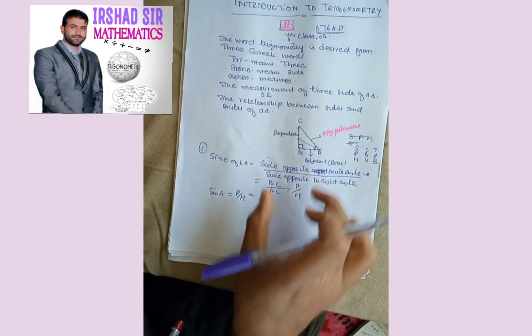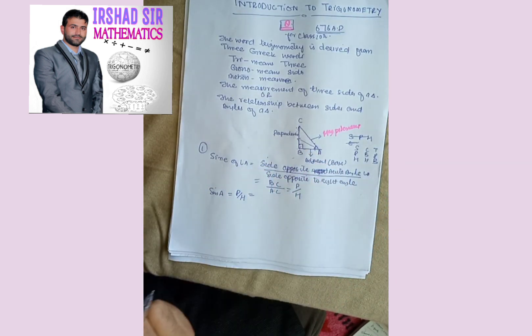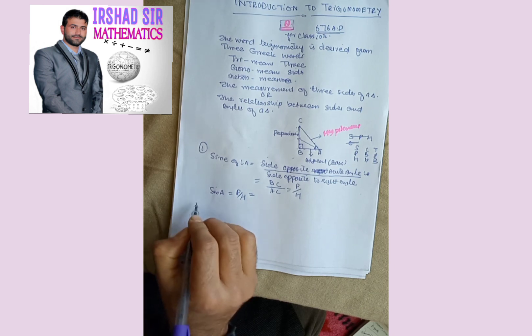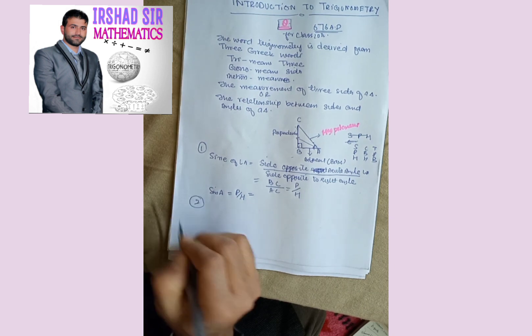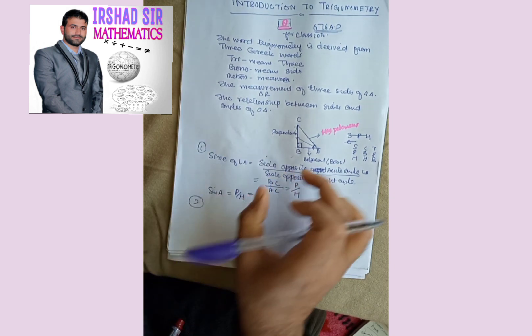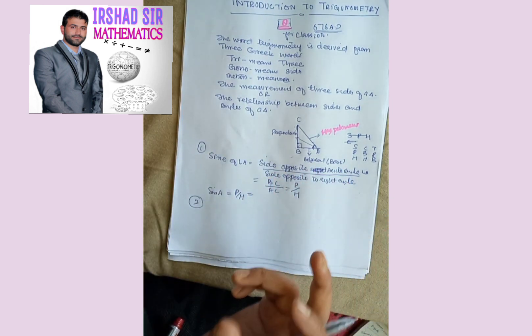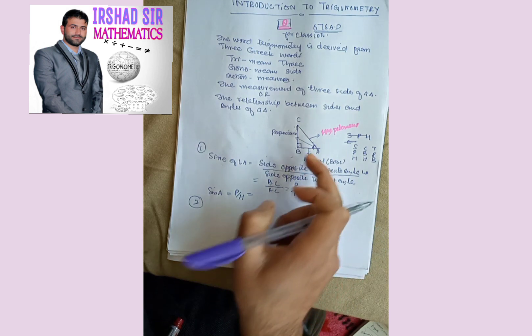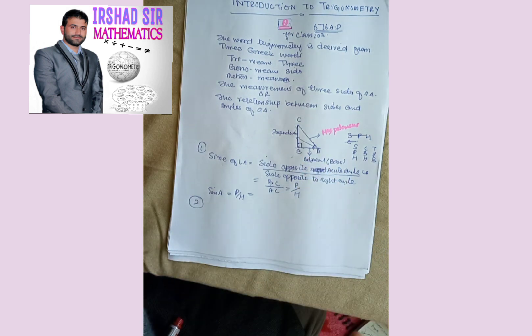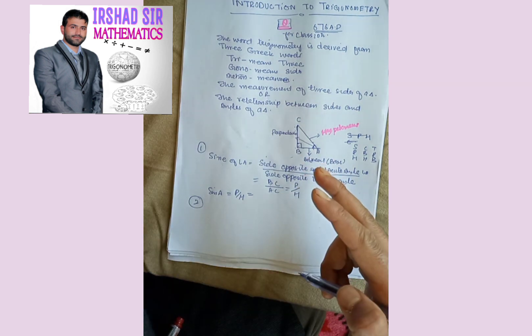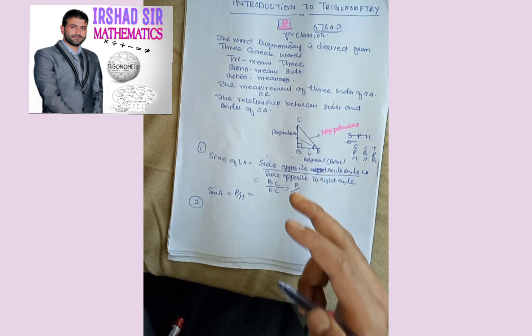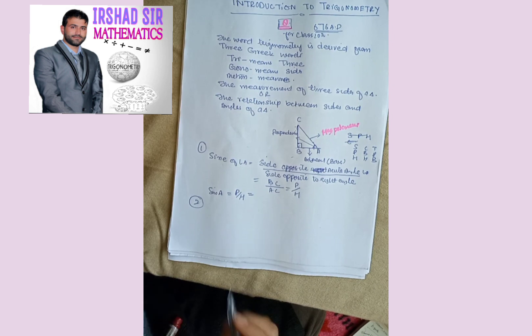These six ratios are simply the ratios of two sides of a right angle triangle. After sine, we have cosine.